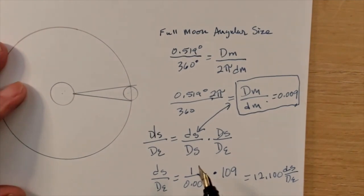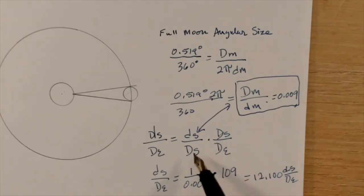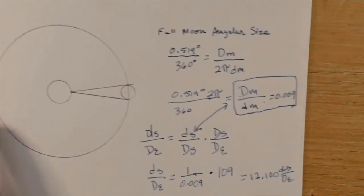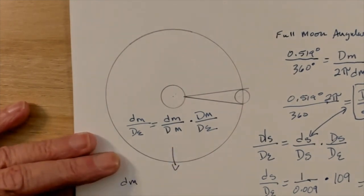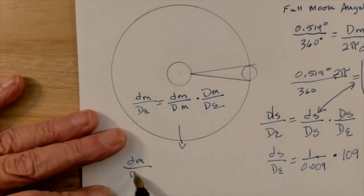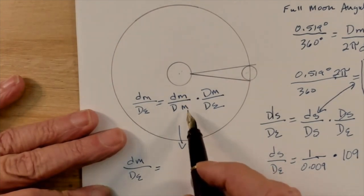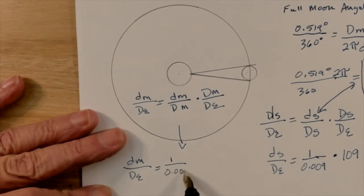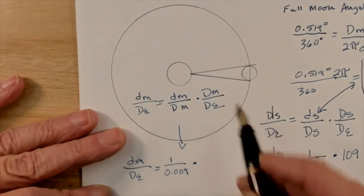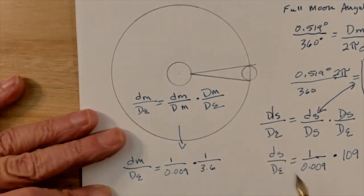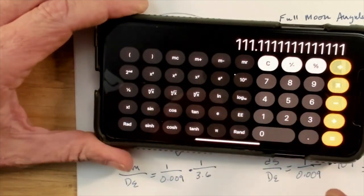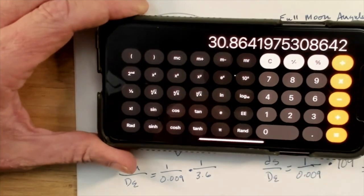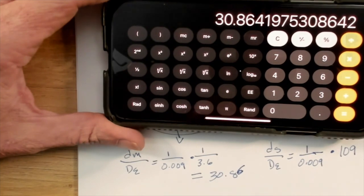We can use this same trick to figure out the distance from the earth to the moon — all we have to do is exchange the diameter of the sun for the diameter of the moon. The distance to the moon over the diameter of earth equals 1 over 0.009 times the diameter of the moon over the diameter of the earth. The earth is 3.6 times the diameter of the moon. The distance from the earth to the moon is about 30.86 earth diameters.